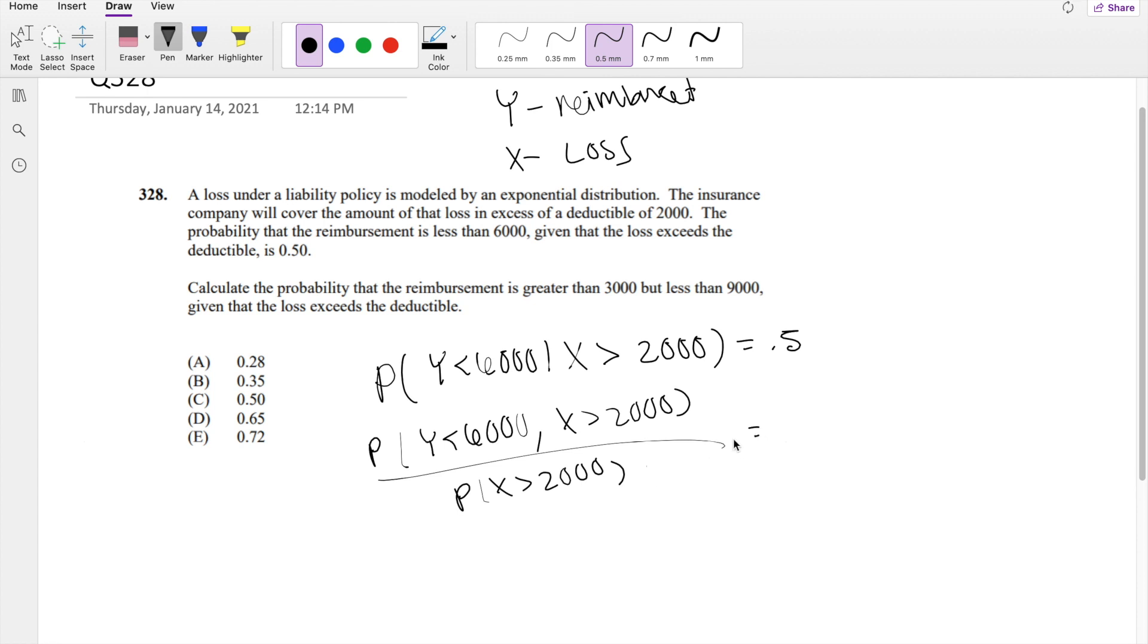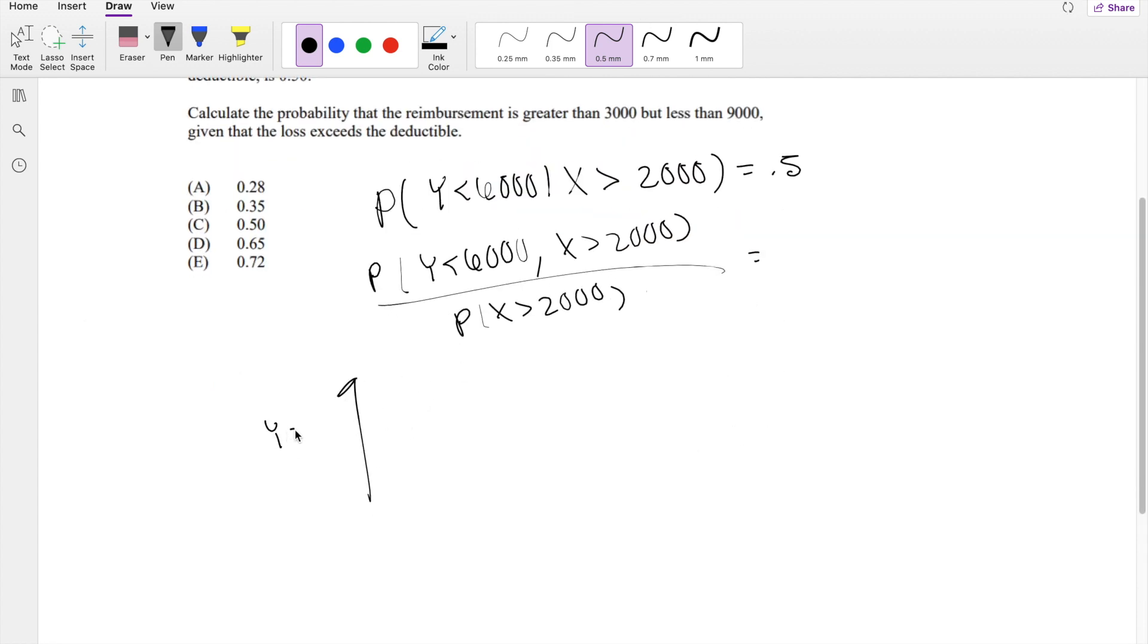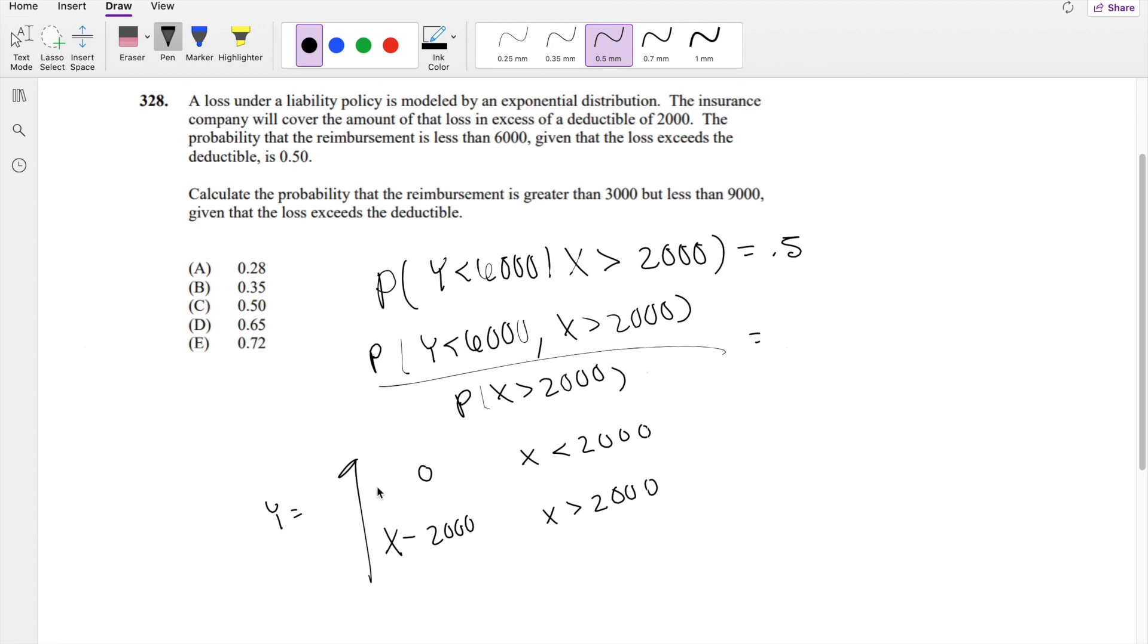We know that for Y, Y is 0 if it's less than the deductible, because then the customer is paying everything out of pocket. But everything above the deductible, they're going to be paying the loss minus the deductible, which is 2,000. So this is something to note here.